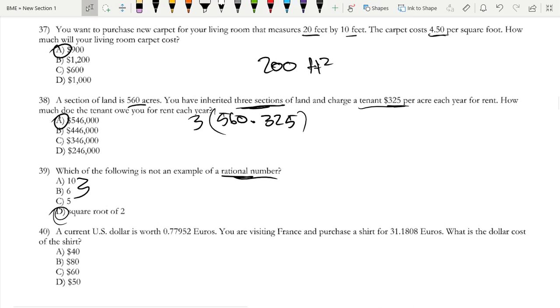Last question. The current US dollar is worth 0.77952 euros. You are visiting France and purchase a shirt for 31.1808 euros. What is the dollar cost of the shirt? So you would do 31.1808 over 0.77952. Personally, I would just round, so I just do 32 over 0.8.